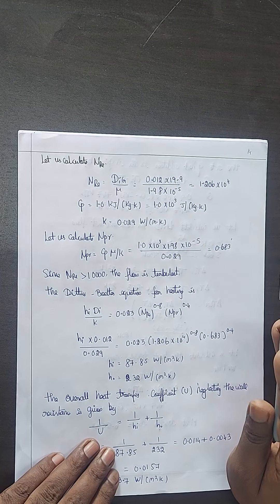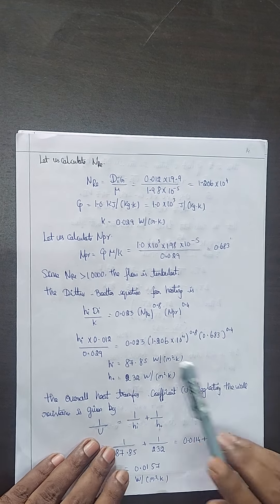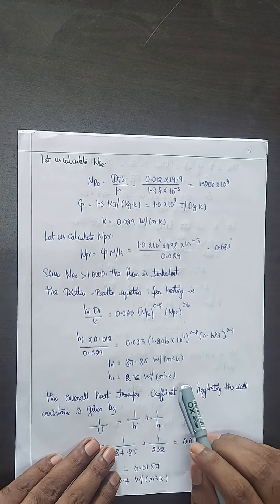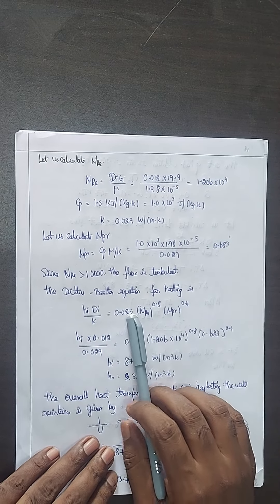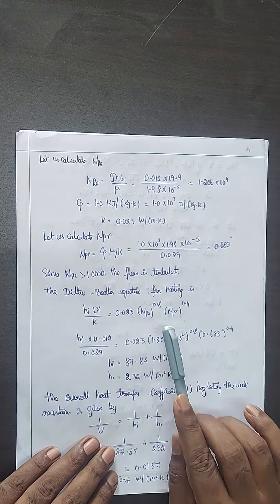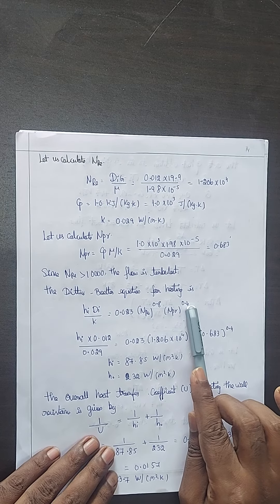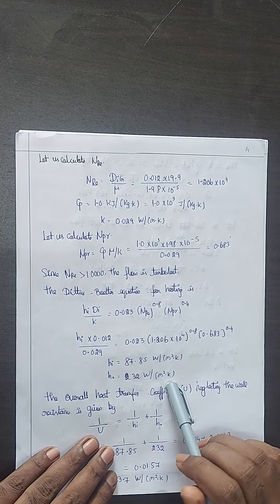For turbulent flow, use Dittus-Boelter equation: hi di by k equals 0.023 Reynolds number to the 0.8 Prandtl number to the 0.4 for heating.